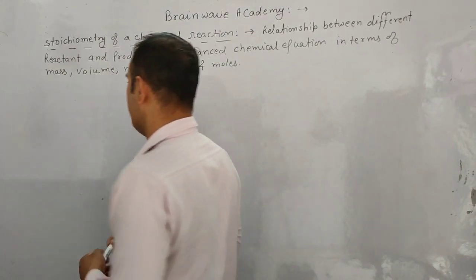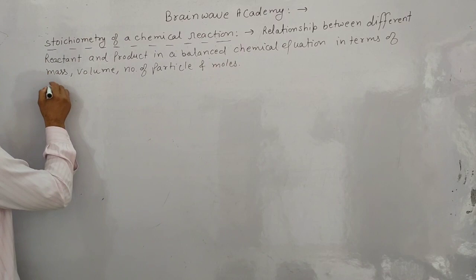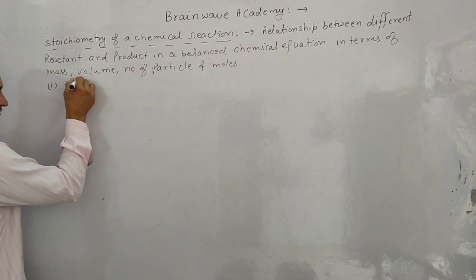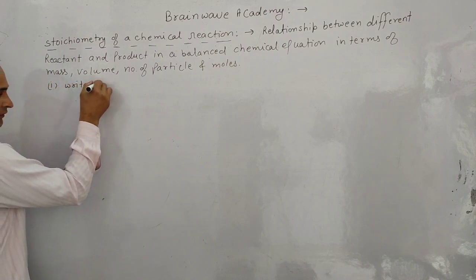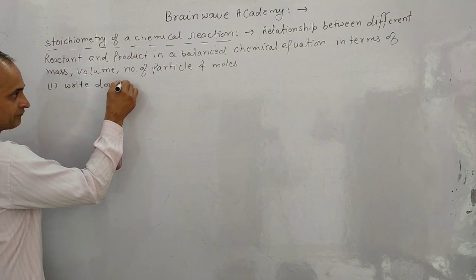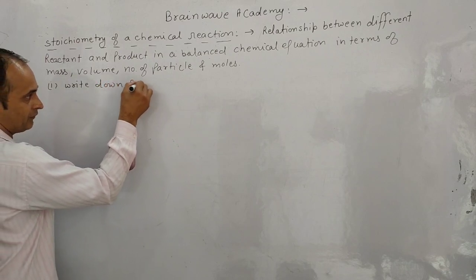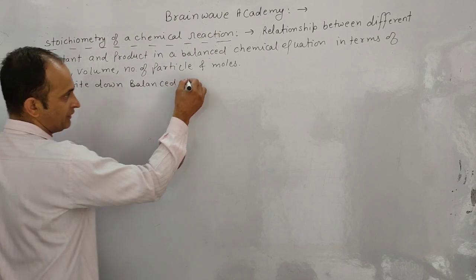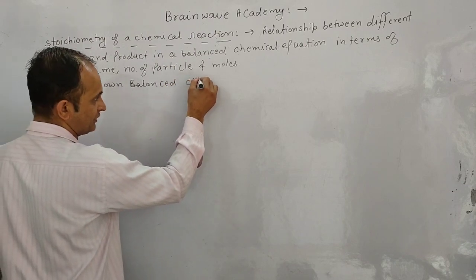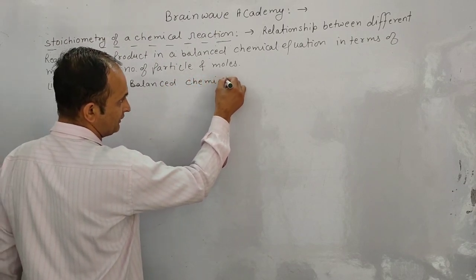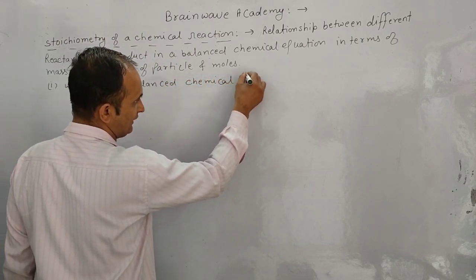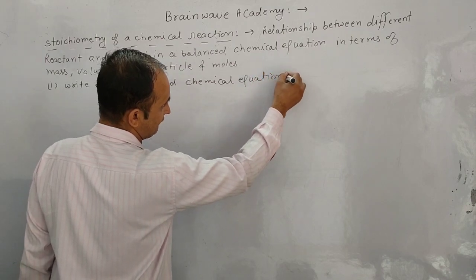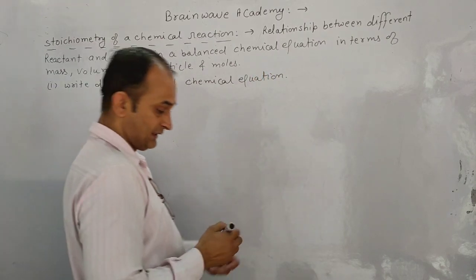How can we do stoichiometric calculation? First, write down the balanced chemical equation. We have to first write down the balanced chemical equation for whatever chemical change has occurred.